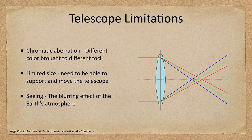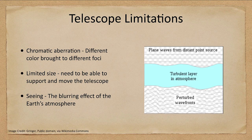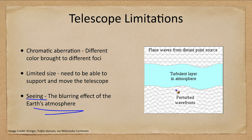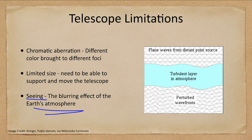One of the other limitations that applies to all telescopes is what we call seeing. Seeing is the blurring effect of Earth's atmosphere. The light comes in all nice and smooth from space, goes through the turbulent atmosphere, and then the light is all distorted, making it very hard to see a clear image. The resolution is really not defined by the telescope — at least for a telescope on Earth — but is often defined by the atmosphere. So you want to put a telescope in places where the atmospheric effects are the least, which is why a lot of telescopes are in high mountains.